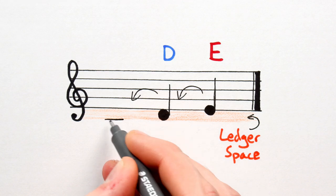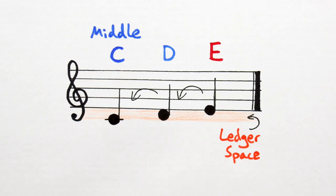Next note down is called middle C and it's drawn slightly away from the stave on the first ledger line.